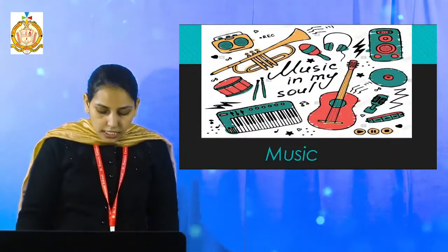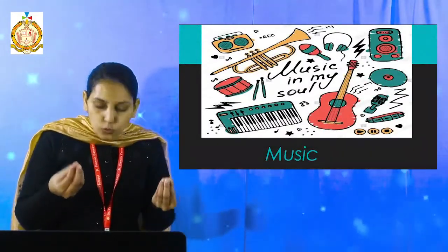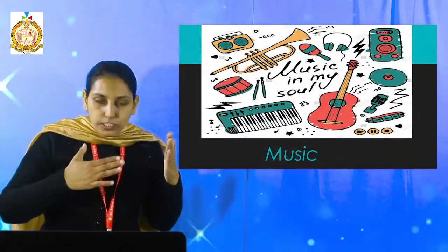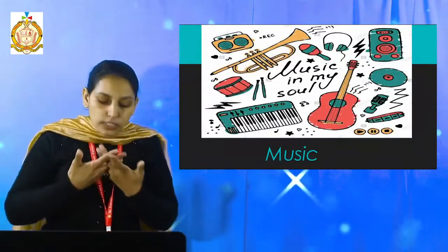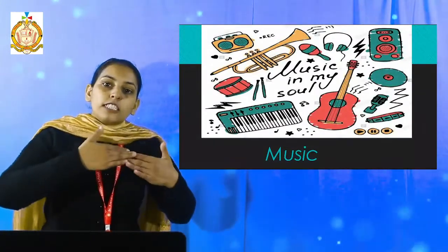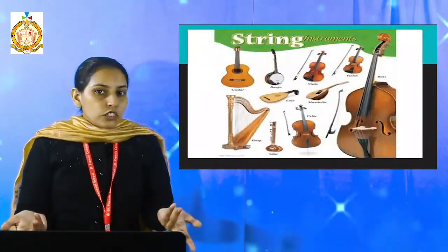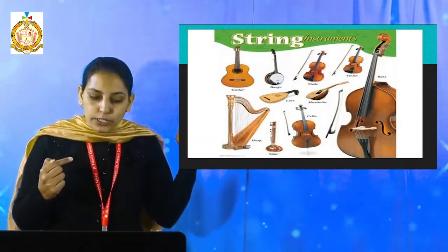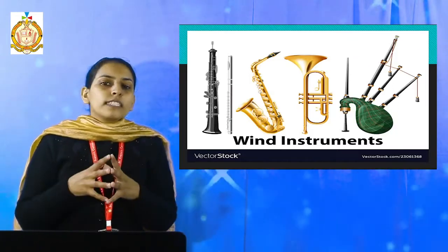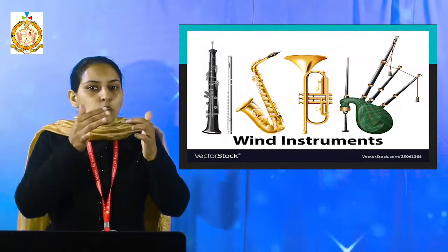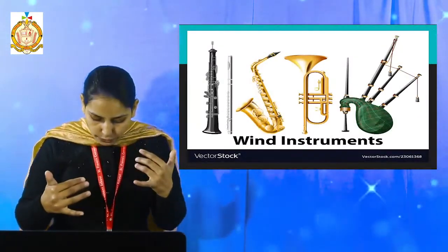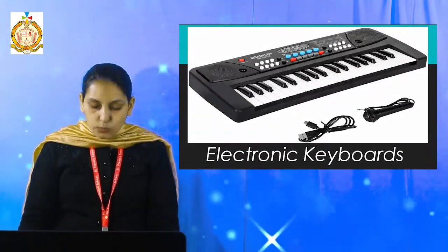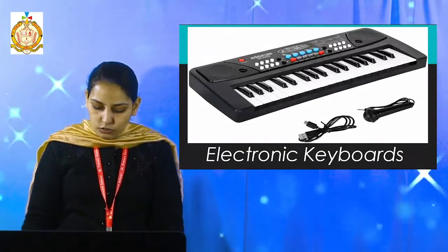Next is music. Music is food for the soul. A good musician can change our mind and reduce our stress through music. Different musical instruments provide different types of sounds. Music instruments are further divided into subcategories. First is string instruments — for example in the guitar, there are wires; once we pluck these wires, sound is produced. Next is wind instruments — there are some holes; when we open and close them, sound is produced. Third is electronic keyboards, also known as digital keyboard, which are based on the principle of electronic oscillations.